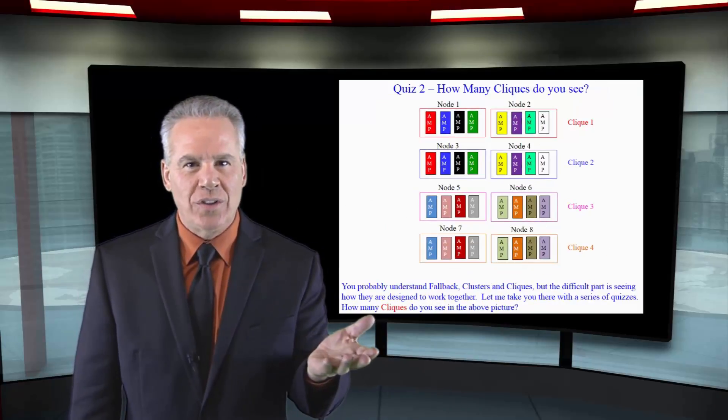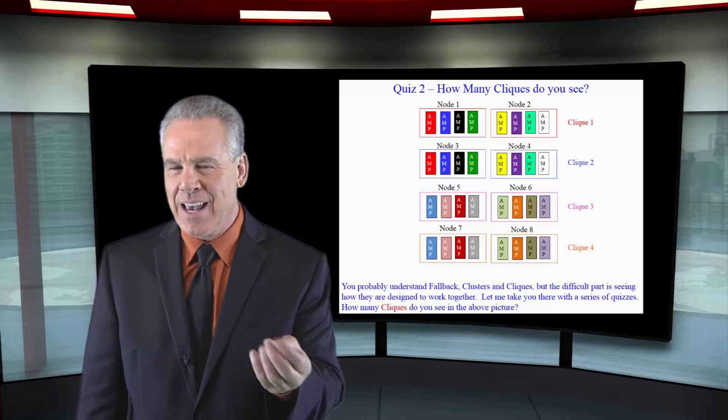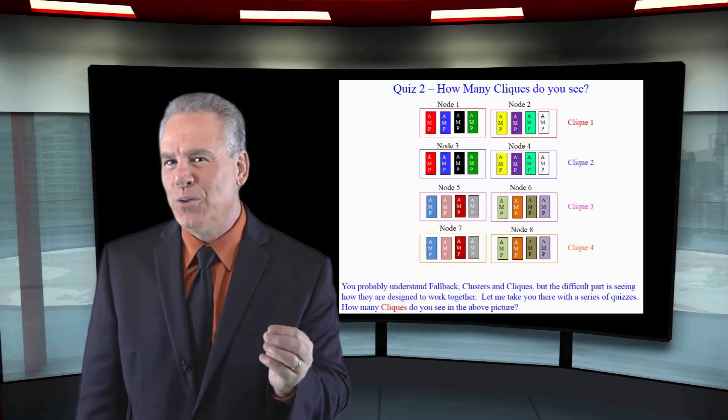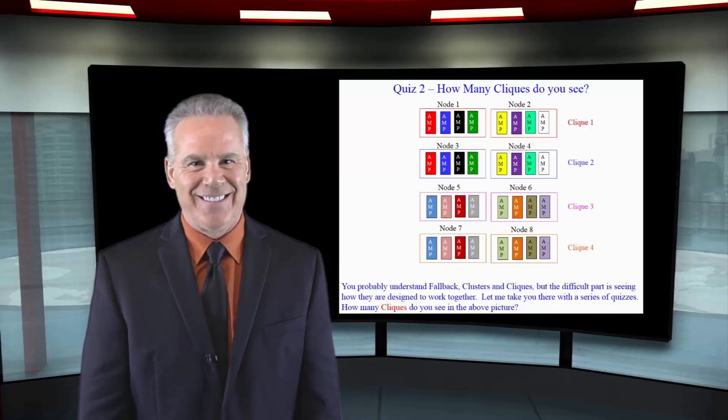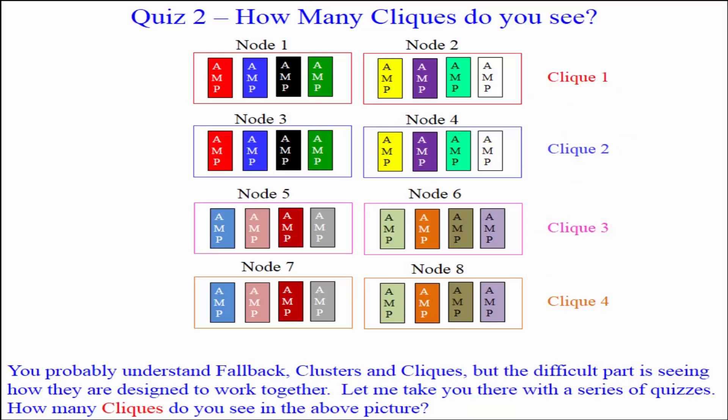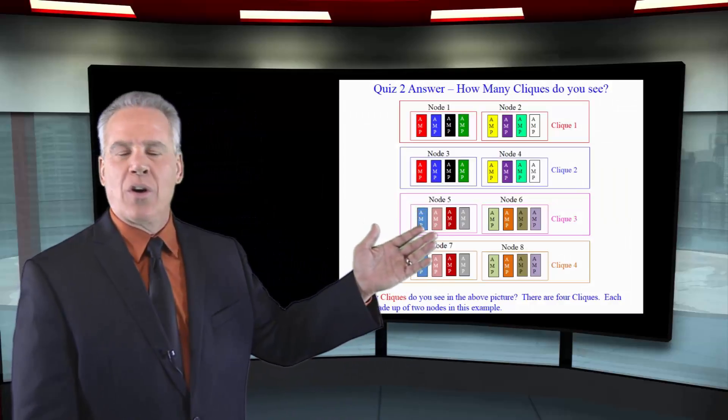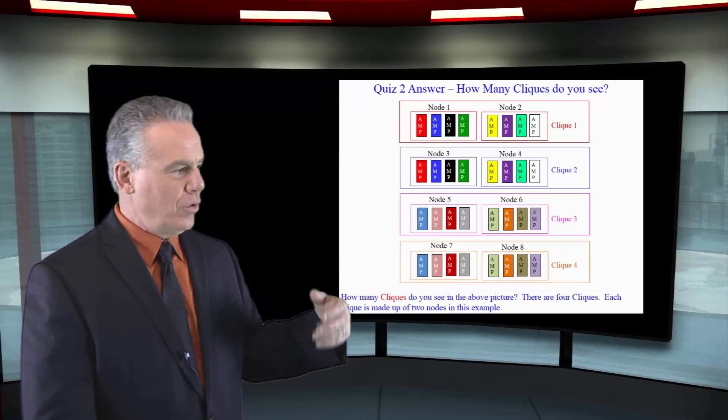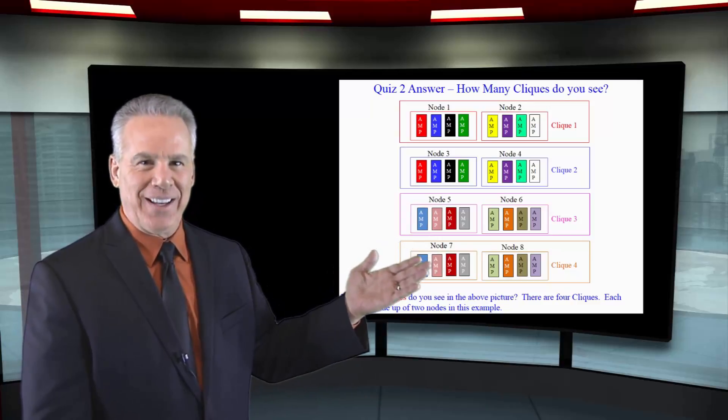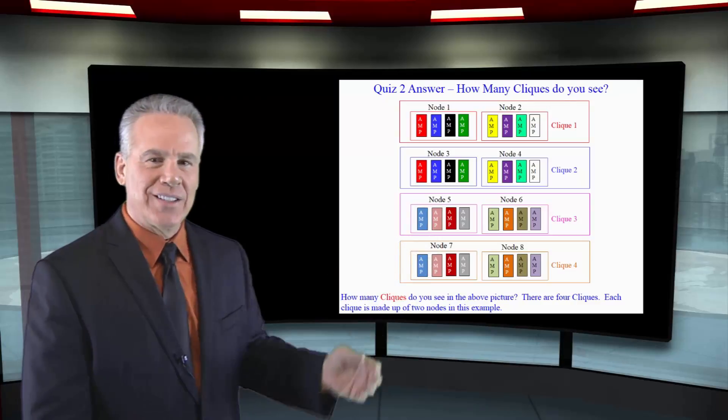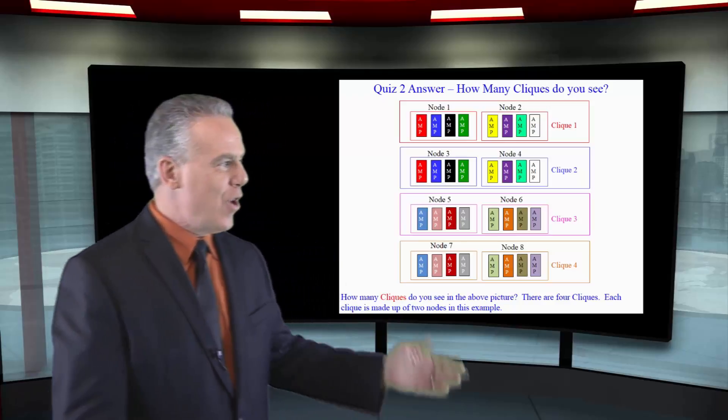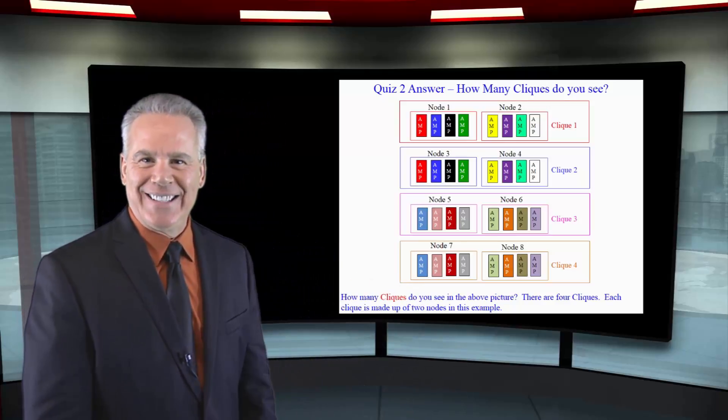Nodes are in cliques. How many cliques do you see here? There are four cliques here. Node 1 and Node 2 are in the same clique. Nodes 3 and 4 are in the same clique. 5 and 6 are in the same clique. And Node 7 and 8 are in the same clique.